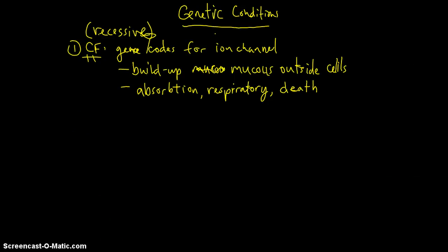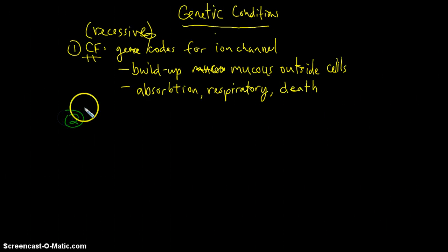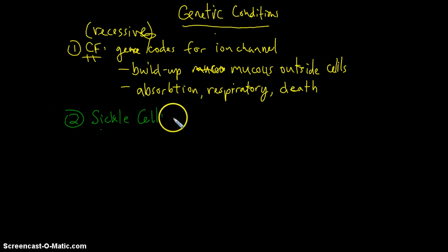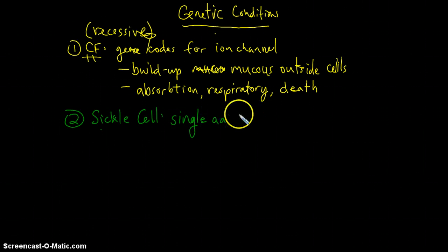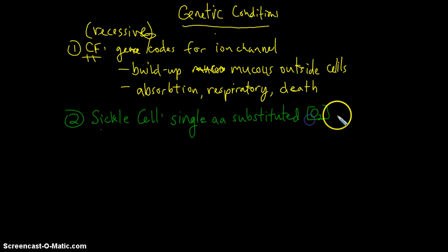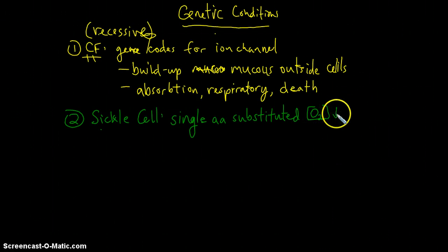The second condition that we'll look at is sickle cell disease. Now what happens — and this is remarkable — a single amino acid gets substituted in this sickle cell gene. And as a result of that, when oxygen concentrations are relatively low, it causes a sickling of the red blood cells. Now red blood cells typically have a sort of concave disc shape.